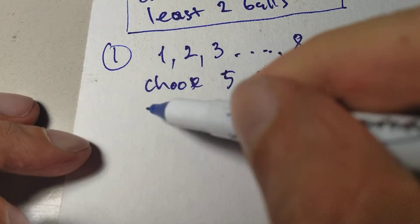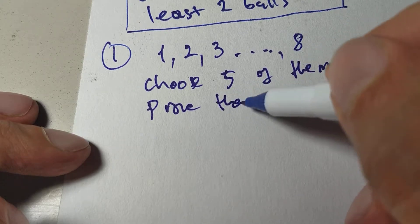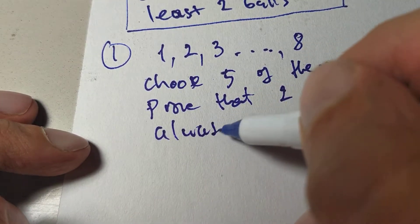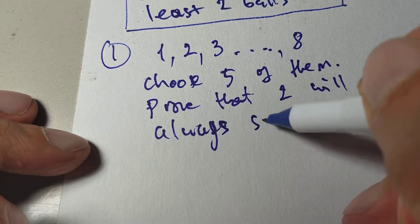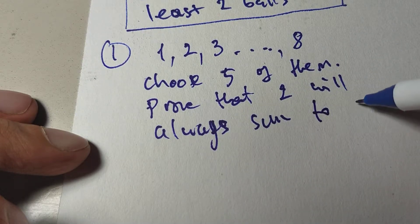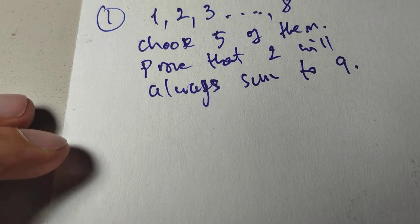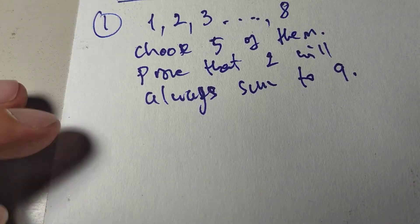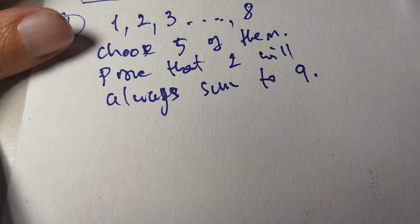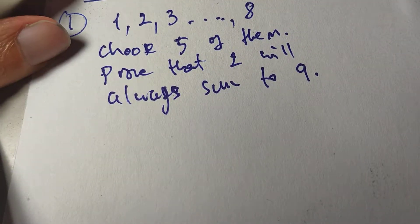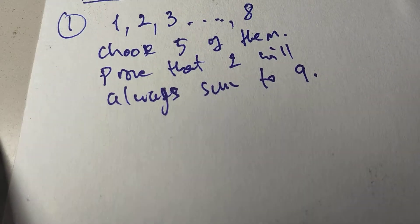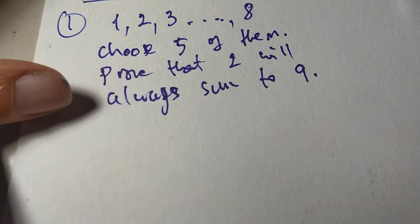Now we prove that, want to prove that two will always sum to nine. You say, wow, how do I prove that? Well, it's exactly one of those things that seems impossible to prove. It's too general, or too strange. But this is exactly the kind of thing that Dirichlet's Principle is made for.